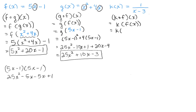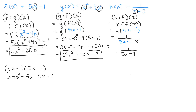Finally, let's do k of f of x. F of x is 5x minus 1, so we compute k of 5x minus 1. Replacing x in the k function with 5x minus 1 gives 1 over the quantity 5x minus 1 minus 3, which simplifies to 1 over 5x minus 4. That can't be simplified any further, so that's our answer.